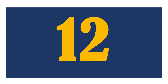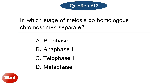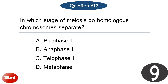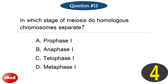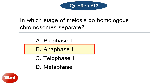Question number twelve. In which stage of meiosis do homologous chromosomes separate? The correct answer is letter B: anaphase one.